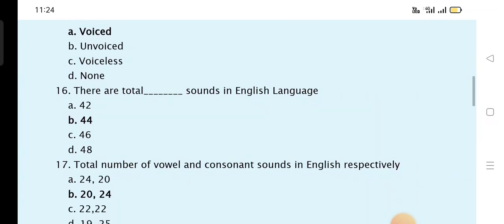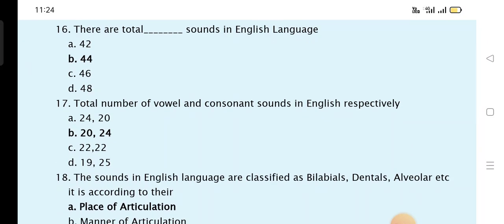There are total blank sounds in English language: 44. The total number of vowel and consonant sounds in English respectively: 20 and 24. 20 is vowel sound and 24 is consonant sound.